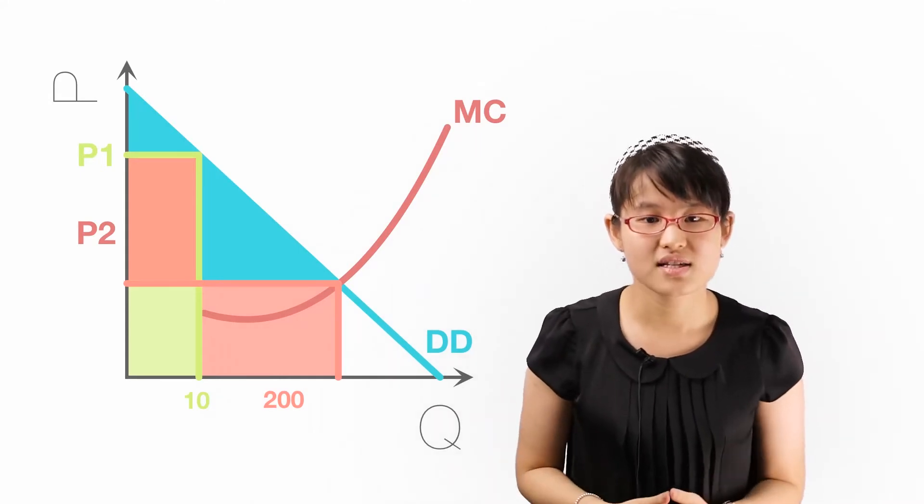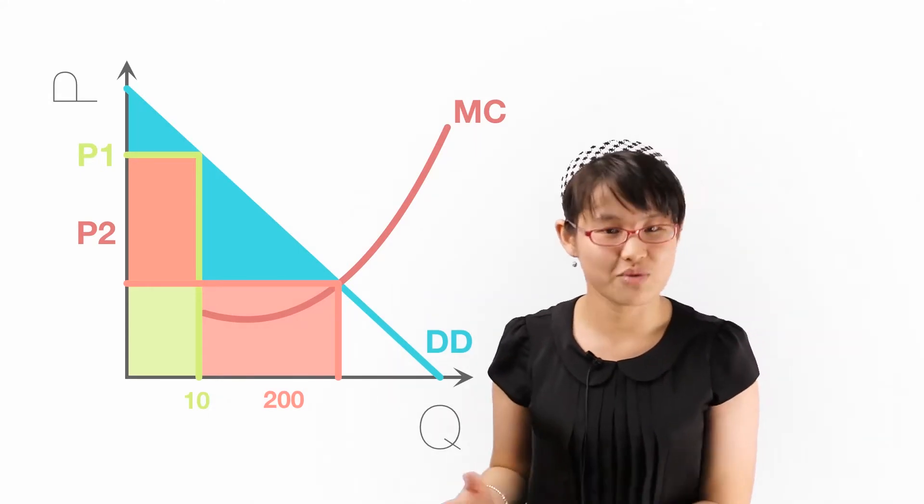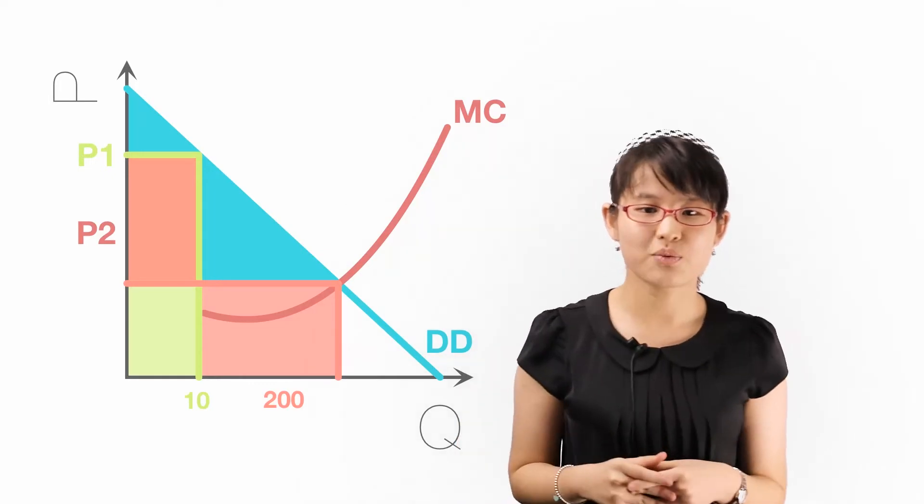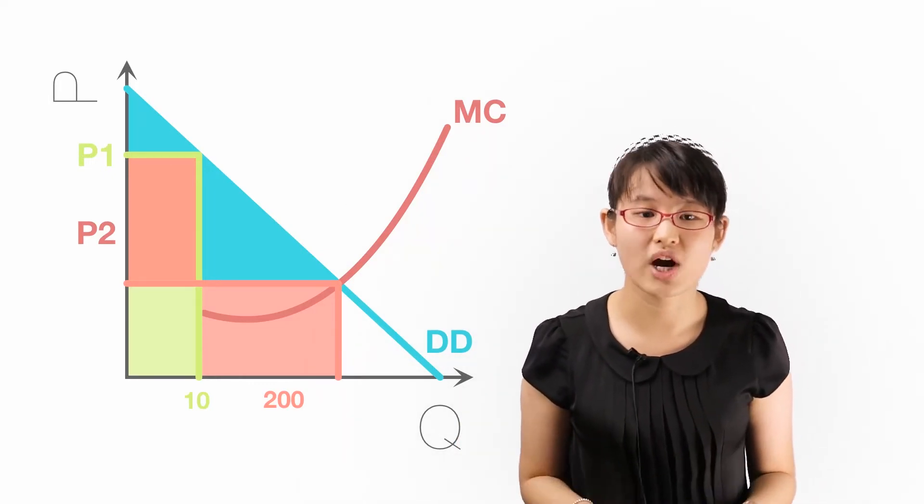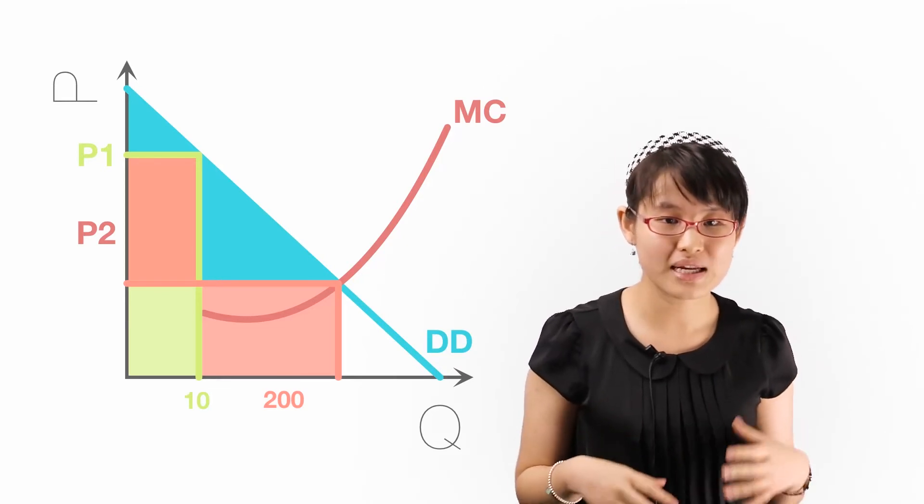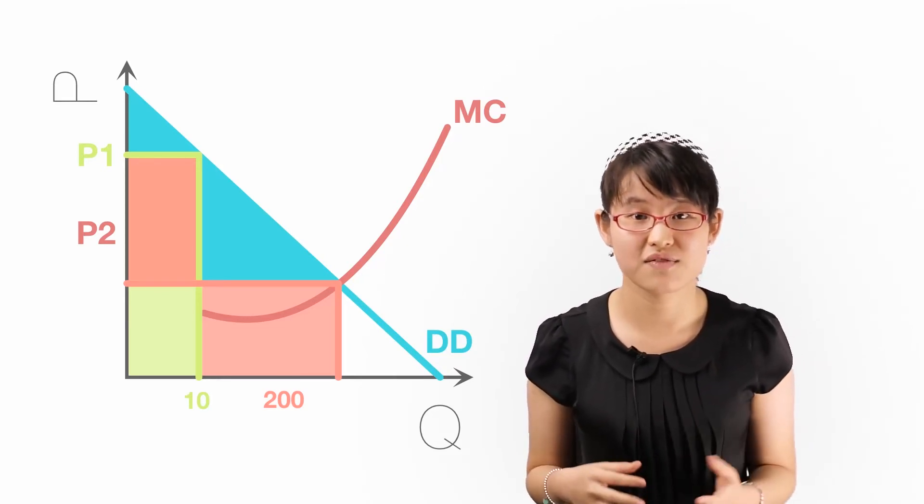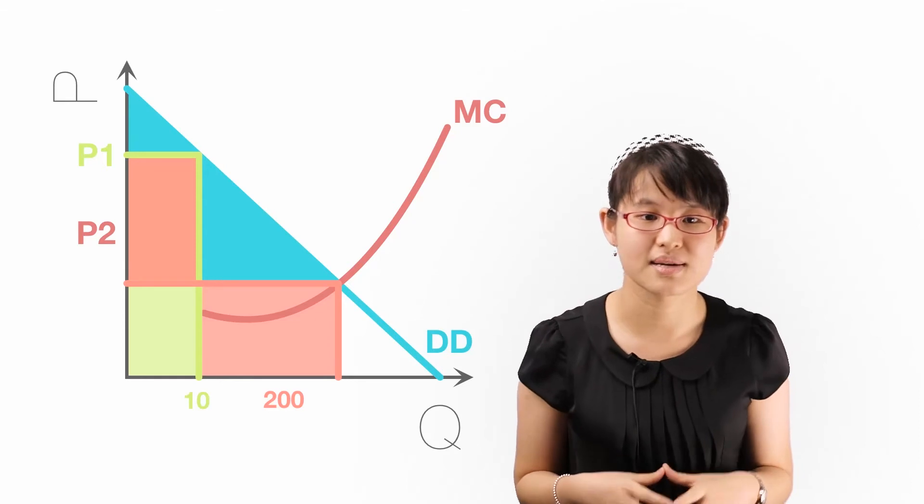As you may have realized, second-degree price discrimination is particularly widespread in sales to industrial customers, where bulk buyers enjoy higher discounts. A more familiar example would be the quantity discounts given to tour groups when they book air tickets in bulk.